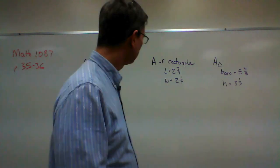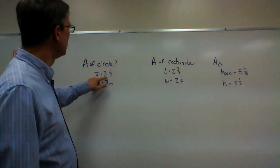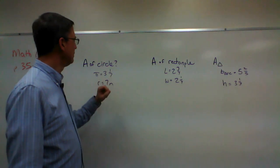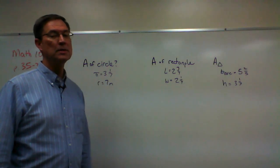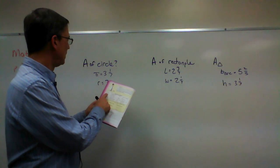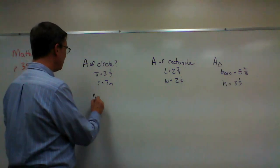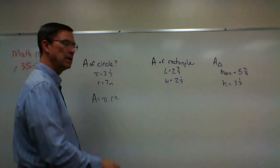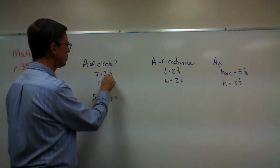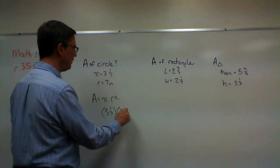Let's take this one: the area of a circle. They tell us to use 3 and 1/7 for pi — sometimes we use 3.14, but here they want this fraction — and the radius is 7. Looking back at the formulas, area of a circle is pi times the radius squared. I'll write down the formula: pi times the radius squared. Now we plug in the numbers: pi is 3 and 1/7, and the radius is 7, which gets squared.